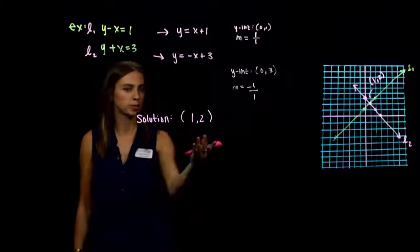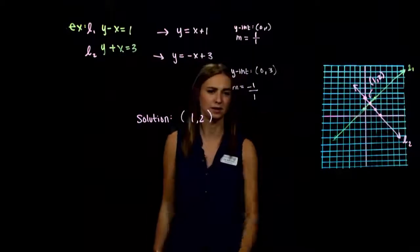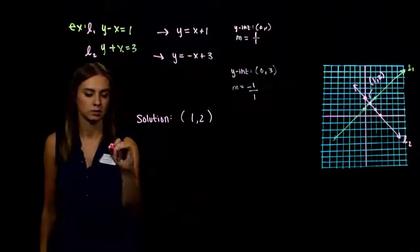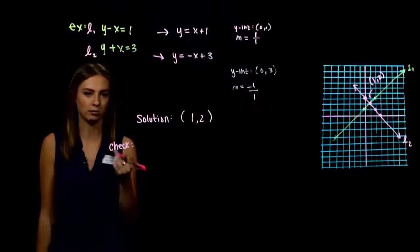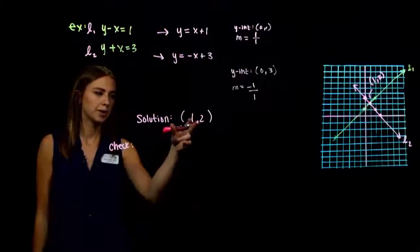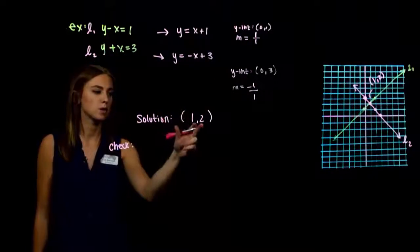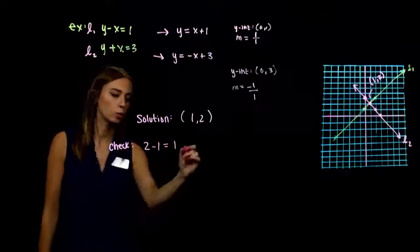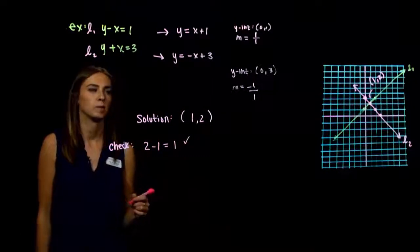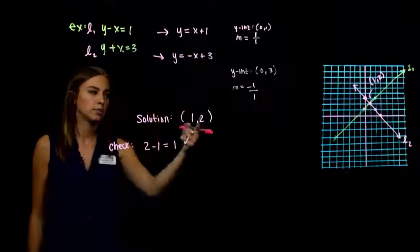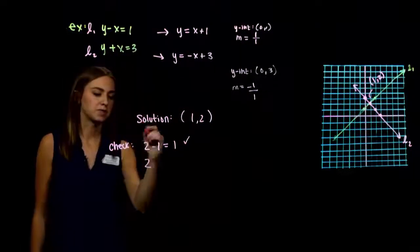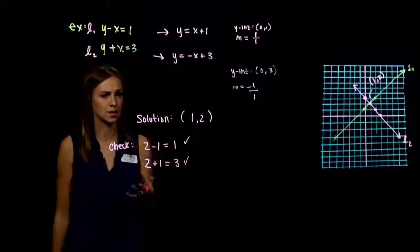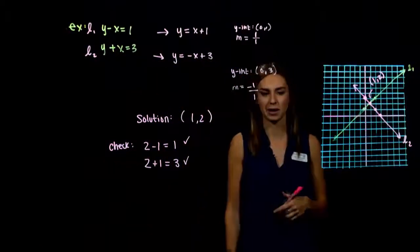Our proposed solution is (1, 2), but perhaps our graph isn't perfectly accurate. We check by substituting back into both equations. Plugging into equation 1: y minus x equals 2 minus 1 equals 1 — verified. For equation 2: y plus x equals 2 plus 1 equals 3 — also verified. Always plug the solution back into both equations to check.